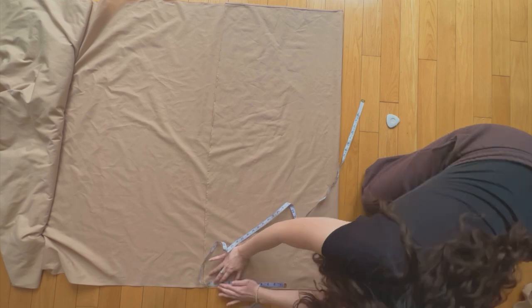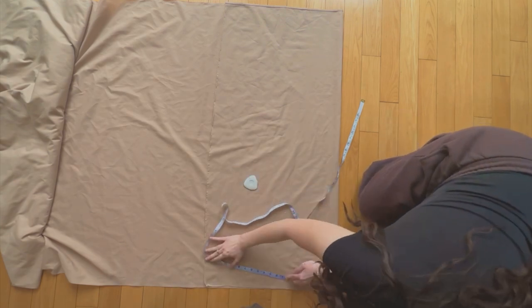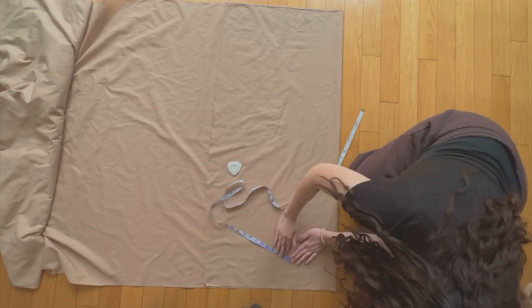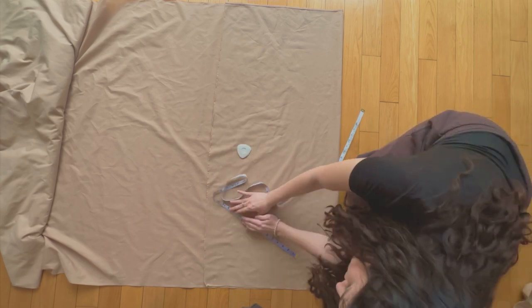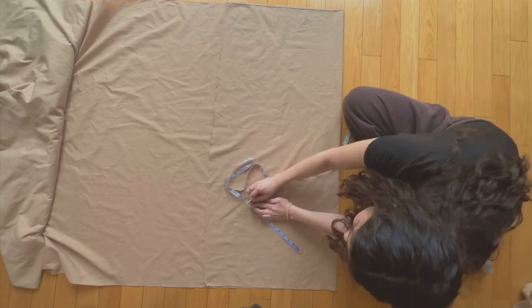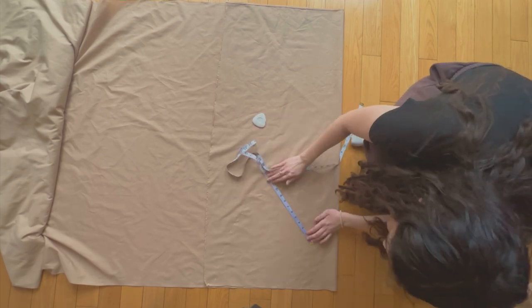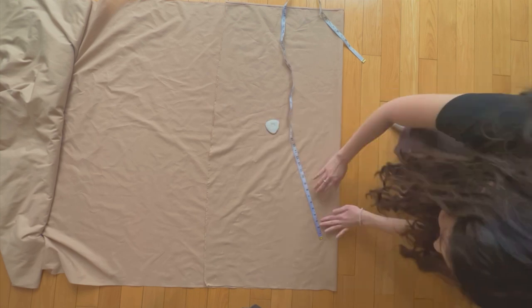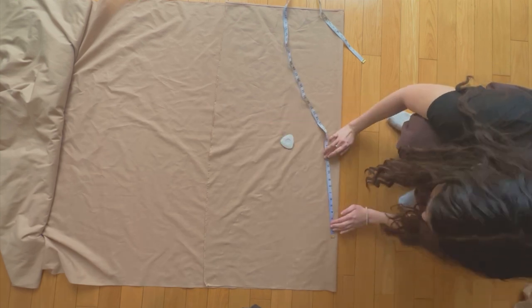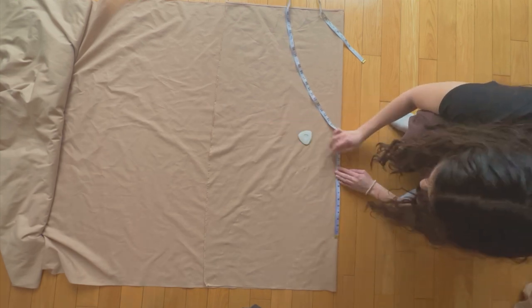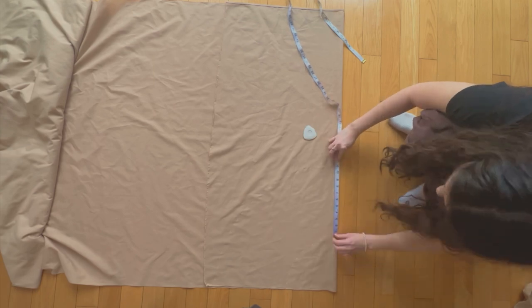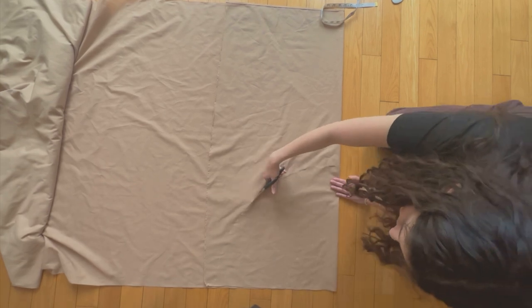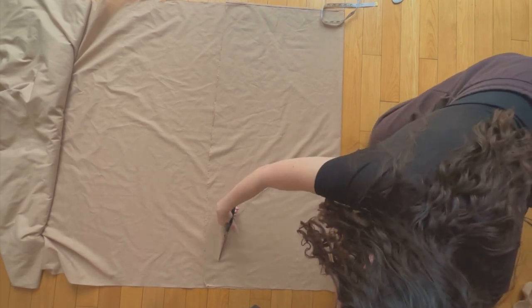Now place your measuring tape on the curve you just drew and mark down at the desired skirt length. The new curve should look exactly the same as the first curve, just bigger. Now you can grab your scissors and cut out the two curves and you'll be left with a half circle skirt and it should fit around your waist.